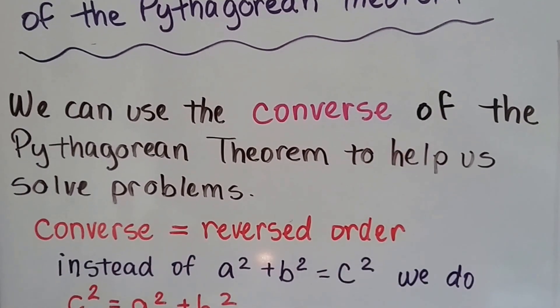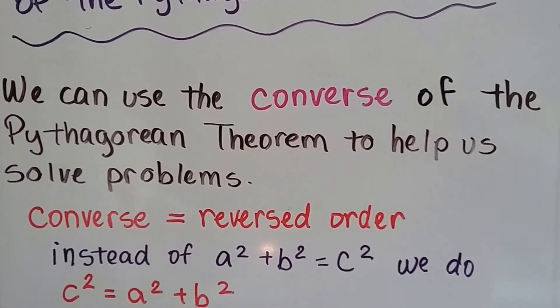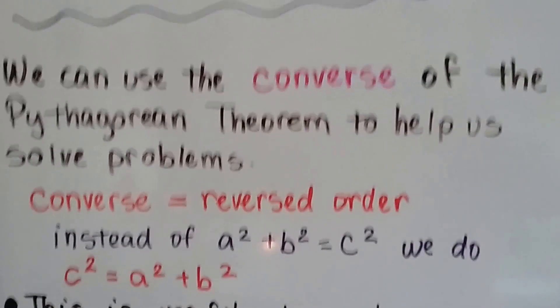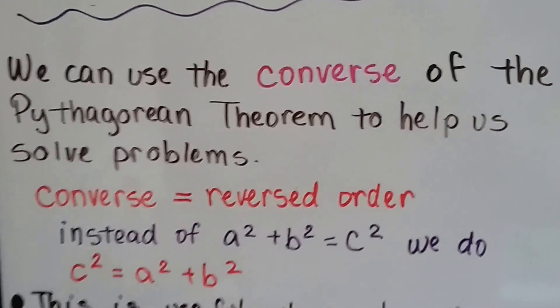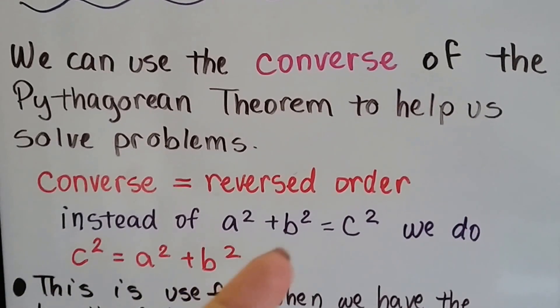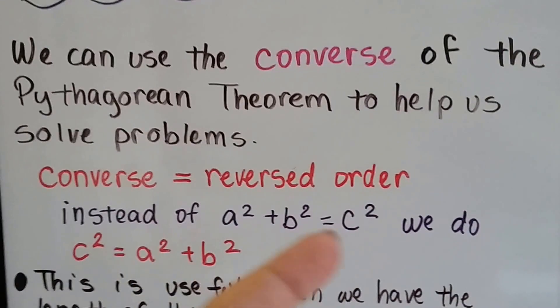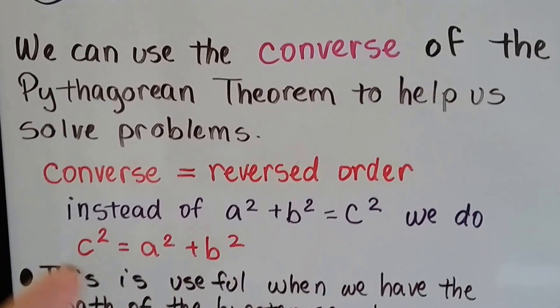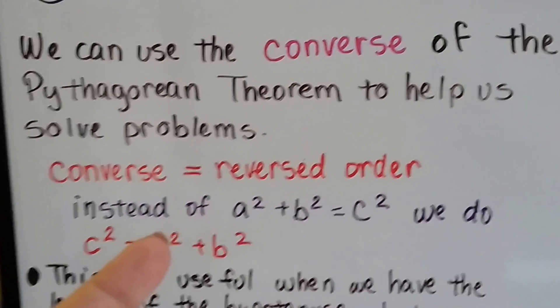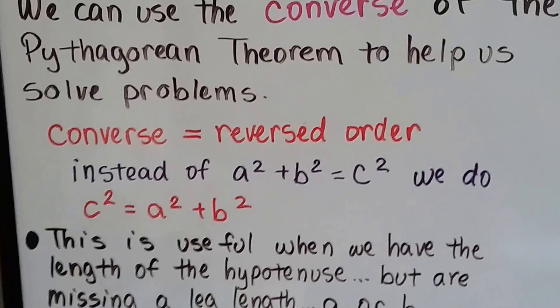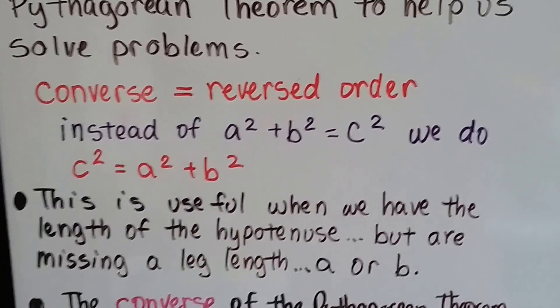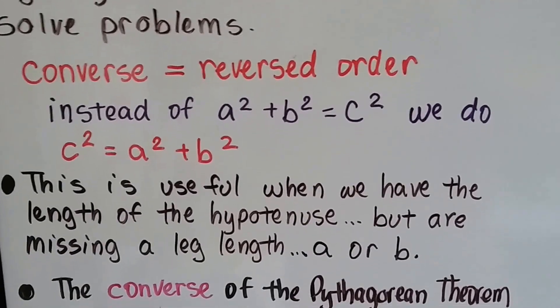We can use the converse of the Pythagorean Theorem to help us solve problems. Converse means reversed order. So instead of using a squared plus b squared equals c squared, which is the regular Pythagorean Theorem, we do it a little backwards. We say c squared is equal to a squared plus b squared. It's a useful tool when we have the length of the hypotenuse, but are missing a leg length like a or b.